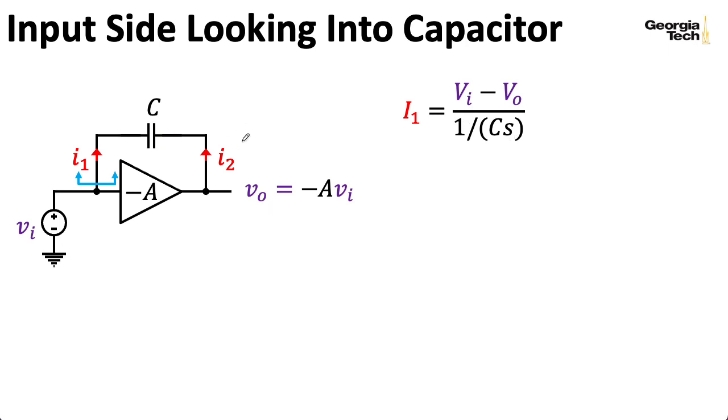Now, notice that I'm using lowercase letters here to represent variables as a function of time, and I'm using uppercase letters here to represent their Laplace transforms. So I'm not using V here to represent something like a DC circuit value and the lowercase letters to represent the AC circuit value. This is differentiating between Laplace transform and original function.